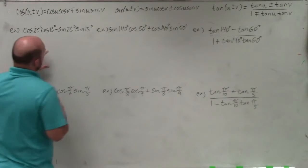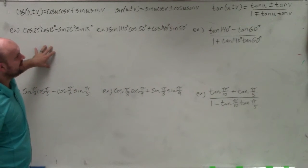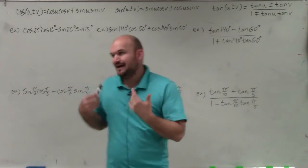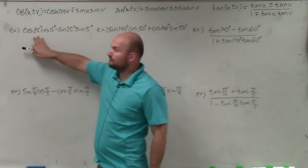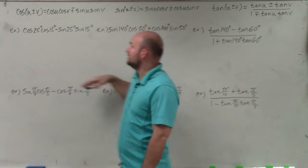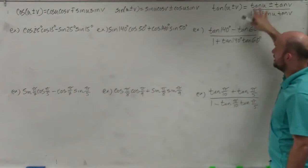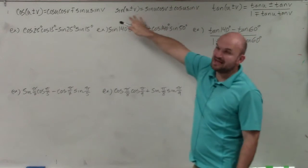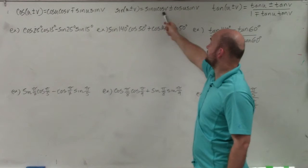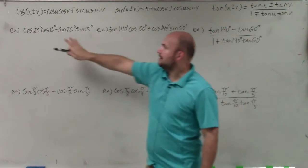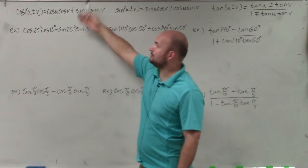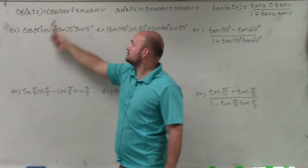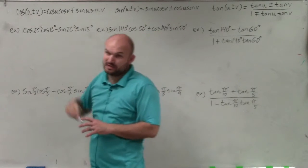The first thing we want to do when looking at these problems is try to identify which sum and difference formula we're using — sine, cosine, or tangent. An easy way to do that is to look at the first two terms. We have cosine and cosine. Tangent clearly doesn't match. The sine formula goes sine, cosine, cosine, sine — that's not what we have. But right above it we have cosine, cosine, sine, sine — so that's the formula we're going to use.